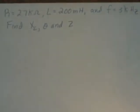In an RL circuit, we're given a value for R of 2.7 kilo-ohms, L is 200 millihenries, and F is 3 kilohertz, and we're asked to find x sub L, theta, and Z.